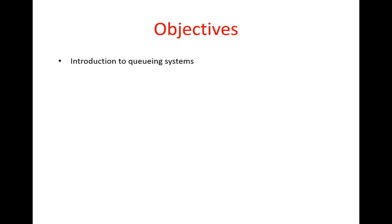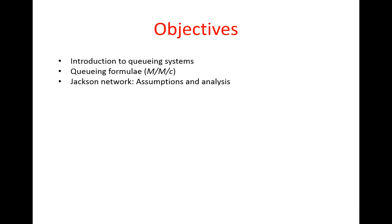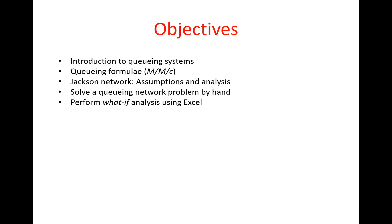We will talk about the queuing formulas for certain types of queuing systems, especially MMC systems. We will talk about the assumptions and analysis of Jackson networks. Finally, we will work a queuing network problem by hand and perform a what-if analysis using an Excel model of the same model.